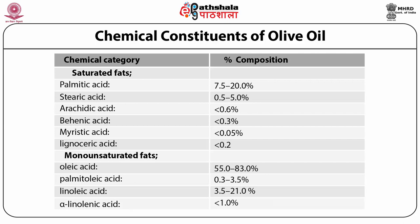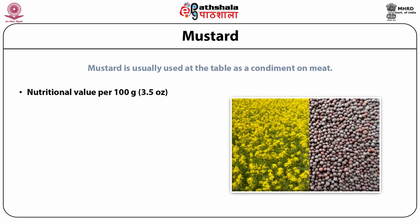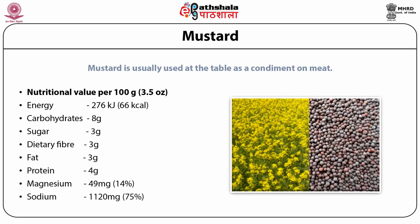Mustard is usually used at the table as a condiment on meat. The nutritional value per 100 grams: energy about 276 kJ or 66 kcal, carbohydrates 8g, sugar 3g, dietary fiber 3g, fat 3g, protein 4g, magnesium 49 mg or 14%, sodium 1120 mg or 75%.